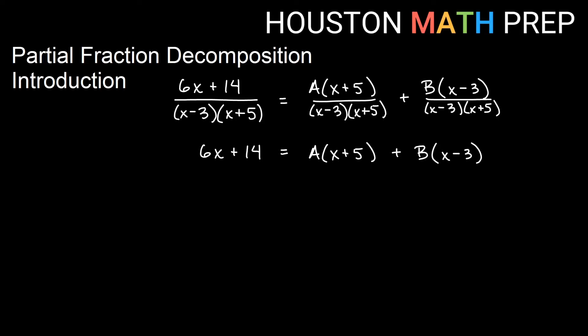When we're solving this fraction and everything is the same on the bottom, we end up simply solving only the tops with all the bottoms being equal. We get 6x + 14 equals A times the factor that was not originally below A plus B times the factor that was not originally below B. We have A and B in this, but it's only one equation and we have an x, so we have three things that are unknown, really only one equation. How do we solve all this?